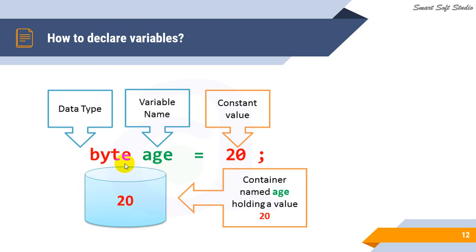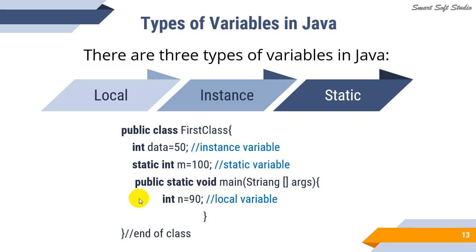Let's see what the internal worth of data is. When we assign this as 20, we see that this is the same as the data type of byte — that is the same as byte. The variable is the same as the local variable, the instance variable, and the static variable.